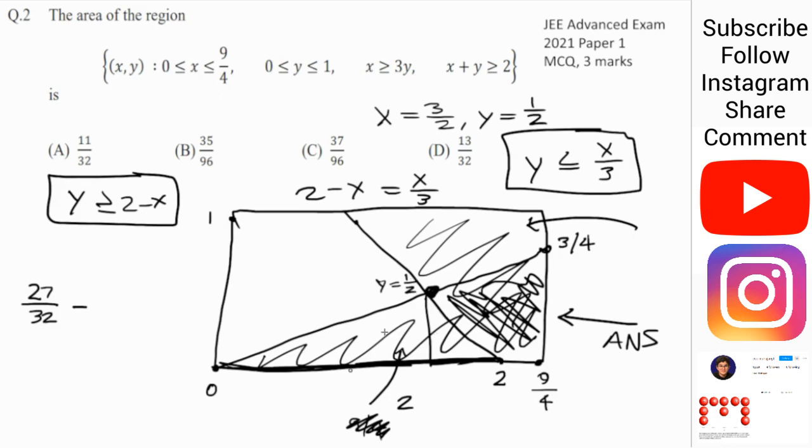So what's the area of this? Base is 2, height is half, so the area is going to be half. So minus half, which is minus 16 over 32, and this gives us our answer of 11 over 32. So we can go and box that, and this will give you 3 marks in just a few minutes. Thank you for watching, I hope you enjoyed.